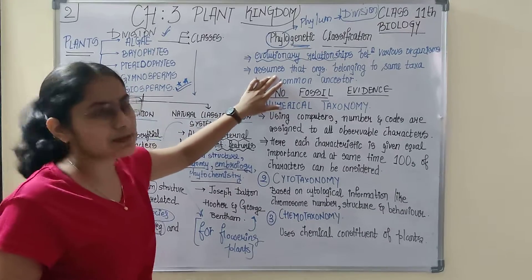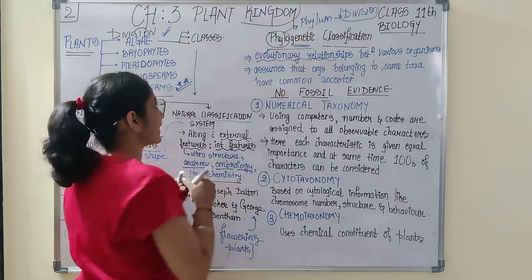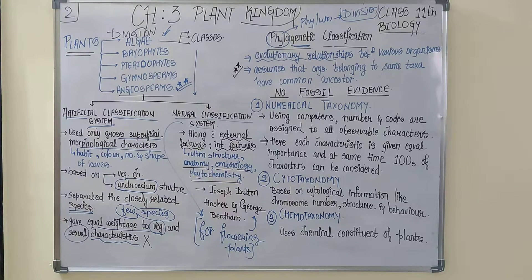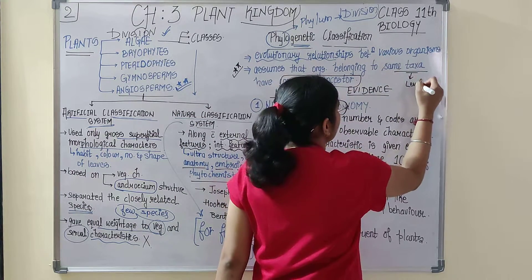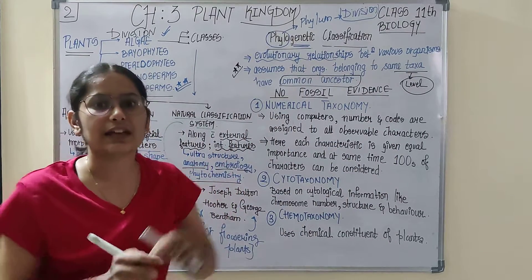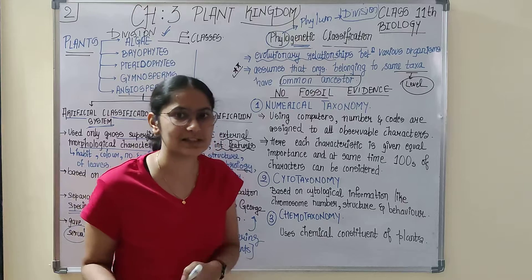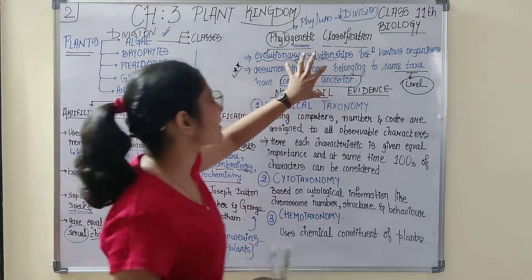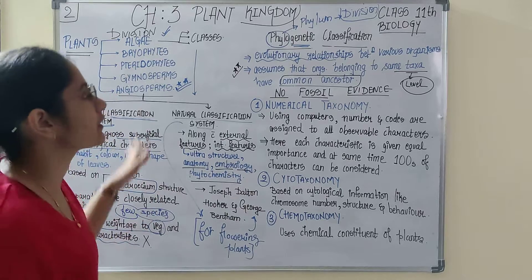Mark this important point: this classification system assumes that if organisms belong to the same taxon, they have a common ancestor. The taxonomic hierarchy starts with kingdom, then phylum or division, then classes, then order, then family, then genus, then species. If organisms belong to the same taxon, they are assumed to have a common ancestor, and accordingly, different organisms are classified.